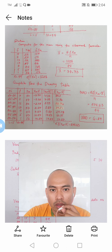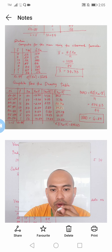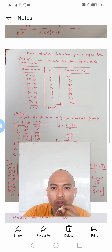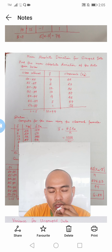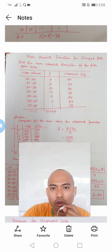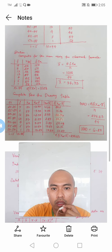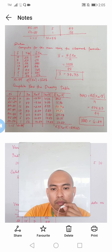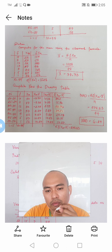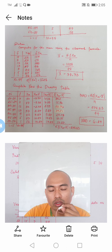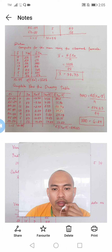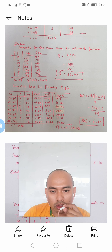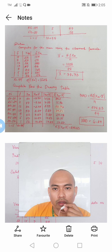Dividing 274.43 by n, which equals 44, we get 6.24 as the value of the MAD for this grouped data. This is how to compute the MAD for grouped and ungrouped data. May I now end this video presentation. Please wait for my next video, where I'll be talking about the variance and the standard deviation. Thank you for watching, and don't forget to subscribe to my channel. Have a good day.